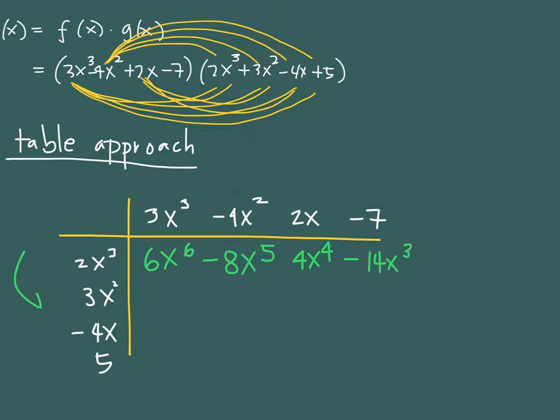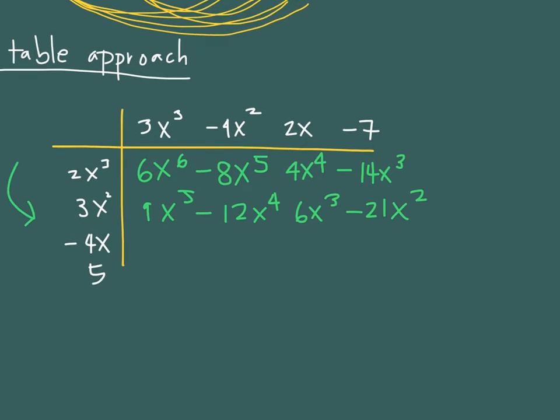Then you move down to the next term and then repeat the process. So 3x² and 3x³ would mean 9x to the 5th. And then you just continue. So that's for the second row. And then repeat the process for negative 4x. You will have, and then finally for 5, and there you go.